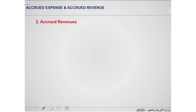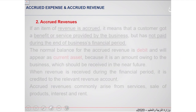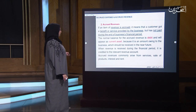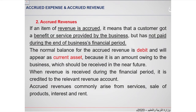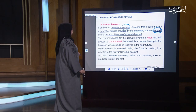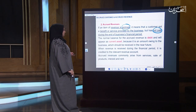Now we talk about the second type: accrued revenue. What do you mean by accrued revenue? If an item of revenue is accrued, it means the customer received a benefit or service was provided by the business, but it has not been billed or paid during the end of the business financial period.